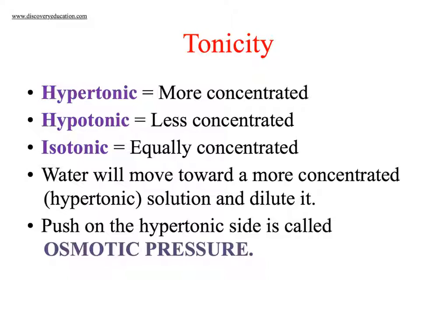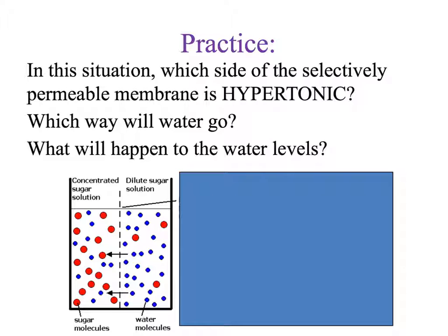In an isotonic solution, nothing happens because water in equals water out. Water always moves where there is less water but more of something else — more solute. If there's a membrane with water and salt inside, water will cross into that membrane toward the more concentrated solute. The pressure resulting from this process is called osmotic pressure. Looking at our diagram, we have a concentrated sugar solution on one side and a dilute solution on the other.